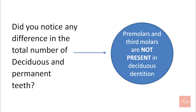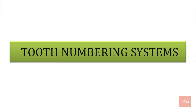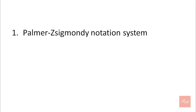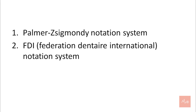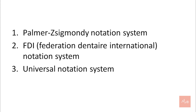Now we move on to tooth numbering systems. There are three tooth numbering systems that are being followed: first is the Palmer-Zsygmondy notation system, second is the FDI (Federation Dentaire Internationale) notation system, and third is the Universal notation system.